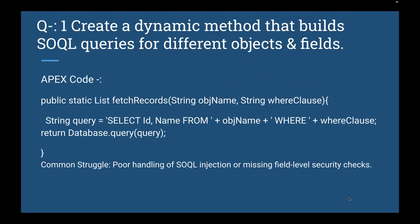The first question they asked is: create a dynamic method that will execute SOQL queries for different objects and fields. You need to write one specific generic method that can be used whenever we are querying for any object. The answer is: provide a public static list, receive a string object name and string where clause as input parameters, build the query as a string, execute it, and return the list of records.